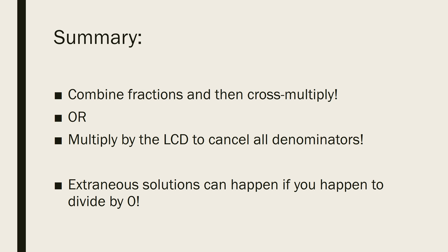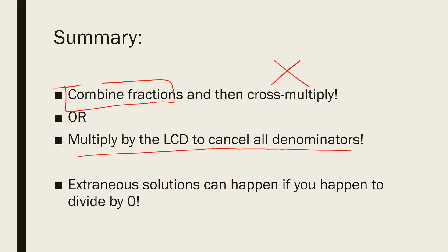Summary: we have two methods. First, combine the fractions so there's just one on each side and then cross multiply. Or multiply through by the LCD to cancel all denominators. Don't forget extraneous solutions — like negative 3 in the last problem — which happen when an answer forces you to divide by zero in the original equation. Thanks for watching this complex, practice-worthy section. See ya!